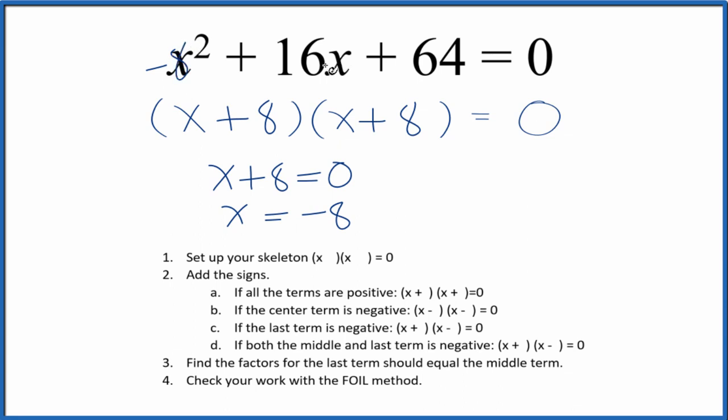So if you put negative 8 in for x, this side of the equation would equal 0. And this would be the same thing. So we've done this part correctly.